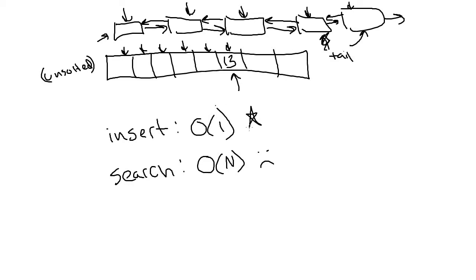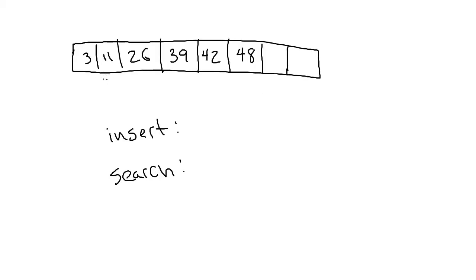For the unsorted array or linked list, inserting is very fast but searching is not. Now let's consider keeping a sorted array. Here, if we want to search, it's more efficient. There's an algorithm called binary search, which only works when an array is sorted. It works by jumping into the middle of the array and seeing if the thing we're looking for is less than or greater than the item in the middle, allowing us to eliminate half the array right away. We then look in the middle of what remains and eliminate half again. Binary search is much, much faster than linear search.